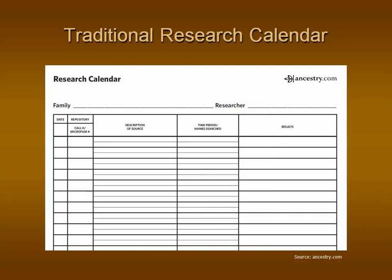You'll notice at the top it says 'family' and then 'researcher.' In the family field, you would put a surname; researcher, your own name. Then we have date, repository, description of source, time period, and results. The whole concept behind the research calendar was that, days before the internet and computers, you would print these off or buy copies. This would be a chronological record attached into your surname folder, and every time you did research, you would add a date and the next item so that you have an in-order listing of all your research. That's a great idea, but the problem is these fields are so absolutely tiny you can't fit any information in them. A microfilm number is not going to fit into that box. From my point of view, it's just not very practical.